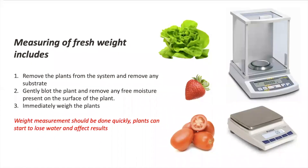To measure fresh weight, we need to first harvest the plant organ or tissue of interest — it can also be the whole plant. Be sure to remove any excess water present on the surface and weigh immediately. This process must be done quickly, as plant tissue can start to lose water.